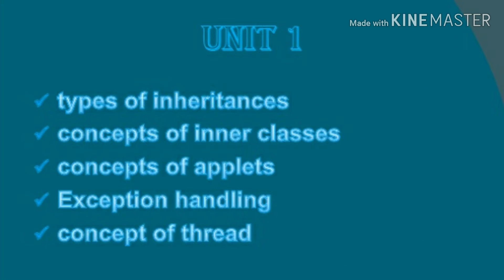Now we will go to the first unit. A very important question is types of inheritance. There are 5 types, and this is an example diagram to represent them. What inheritance does Java support? That is multiple inheritance, and there are reasons for that, which will be found in 4 marks.